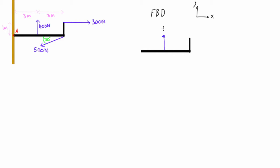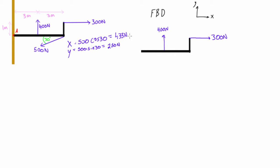We have a force going up of 400 newtons and a force going out at 300 newtons. We should split the 500-newton angled force into its X and Y components. Its X component is 500 cos 30, which works out to 433 newtons, and its Y component is 500 sin 30, which works out to 250 newtons — pointing in the positive X direction and downward respectively.